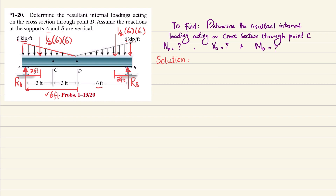The first equilibrium condition is: the sum of all moments about point B equals zero, taking counterclockwise moment as positive.